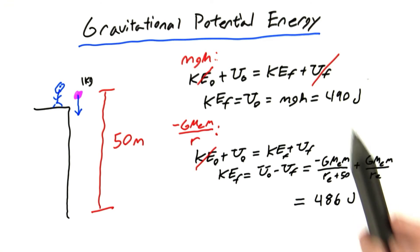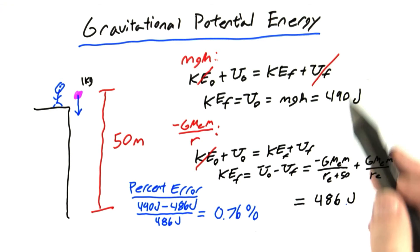Not bad. That's actually quite close to 490. And using these values to calculate a percent error, I get that my percent error for the final kinetic energy is 0.76%. That's not bad at all.